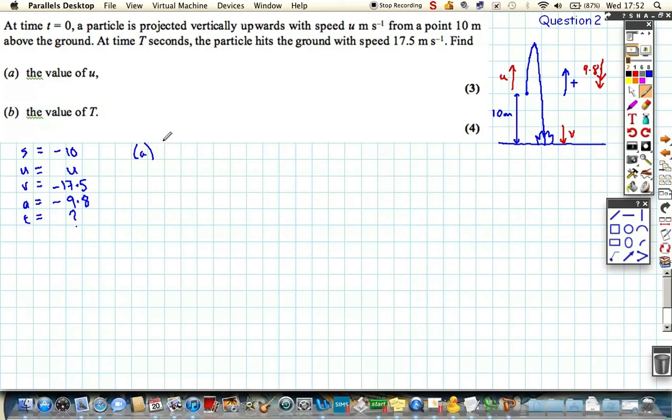So if we just choose, we want to find out the value U, so we want SUV and A. So the equation we want is V squared is U squared plus 2AS. So when we start that off, we find out that 306.25, that's minus 17.5 all squared, is equal to U squared plus 2 lots of minus 9.8, which is the acceleration due to gravity, multiplied by the displacement, which is minus 10, ending up 10 below. These together, we're going to make a positive 196. Double that, and then take that away from 306.25.